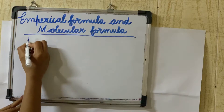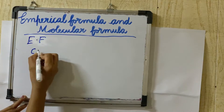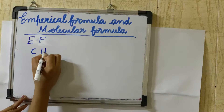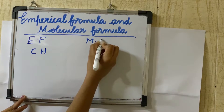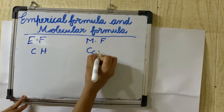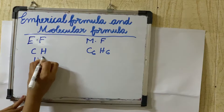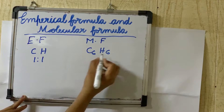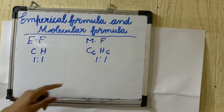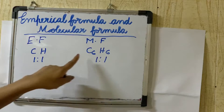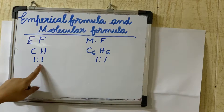Let's take an example: benzene. Benzene's empirical formula is CH. The molecular formula is C6H6. This is a 1-to-1 ratio. C6H6 is the simplified empirical formula CH, which shows a 1-to-1 ratio of carbon and hydrogen.